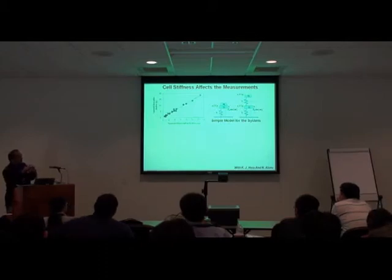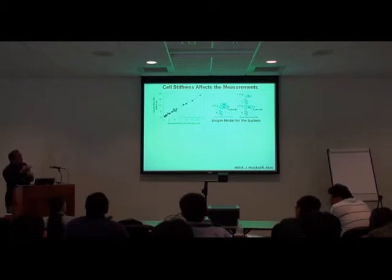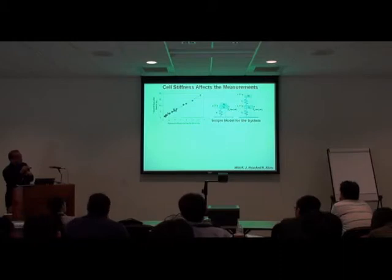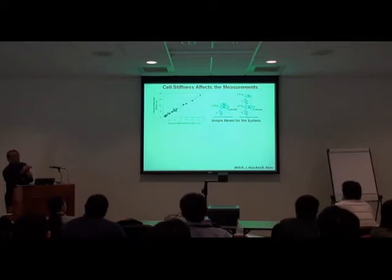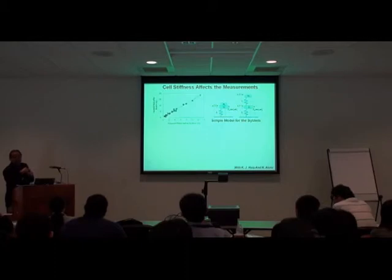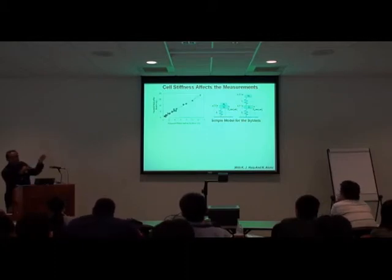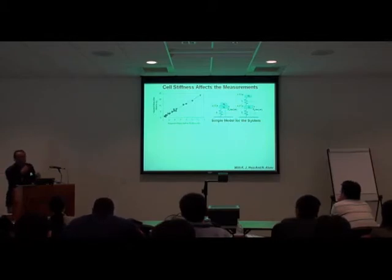We have to look at the model of the cell. In the past, we and others were looking at the cell as a simple spring-mass system where the cell is assumed as a point mass. But in reality, the cell itself has a stiffness, some damping, and a mass. What we are really after is the actual cell mass rather than the apparent mass. This simple model is at least a little better than assuming the cell is just a point mass.